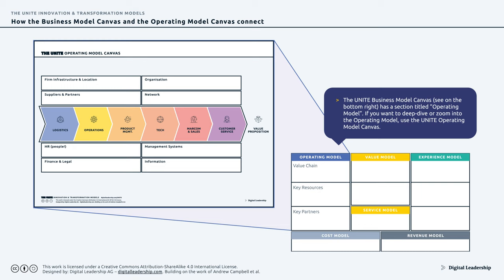The operating model canvas is tightly integrated with the rest of the business model canvas. For those familiar with the business model canvas, the operating model canvas covers the back end of the UNITE business model canvas. This drawing shows the integration between the two — the operating model details the value chain, key resources, and key partners summarized in the business model canvas.